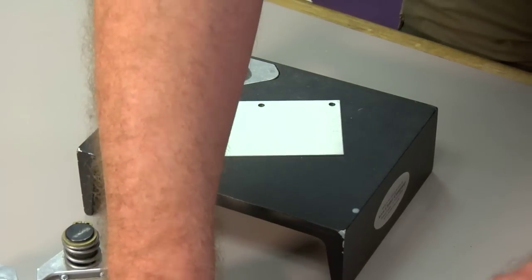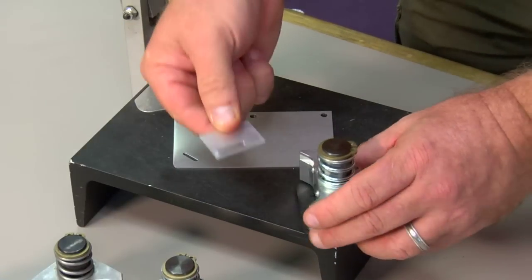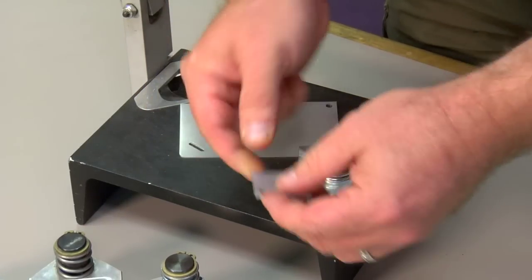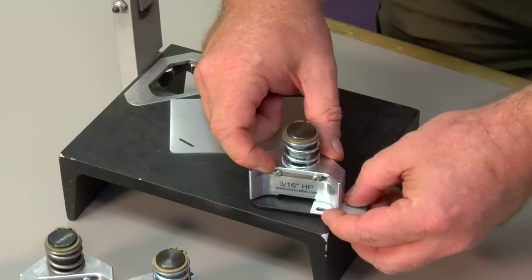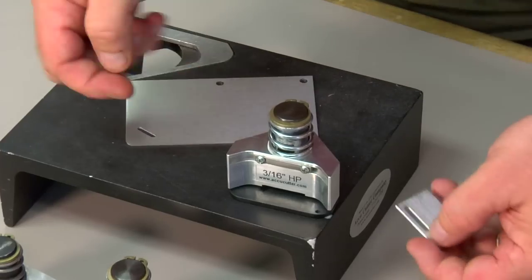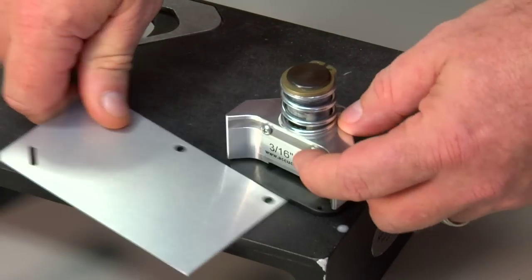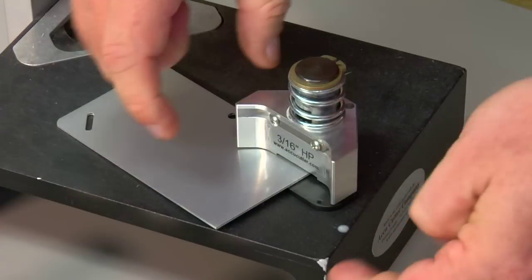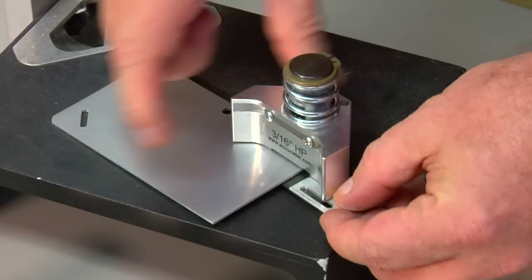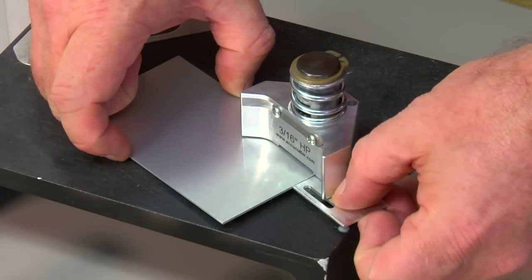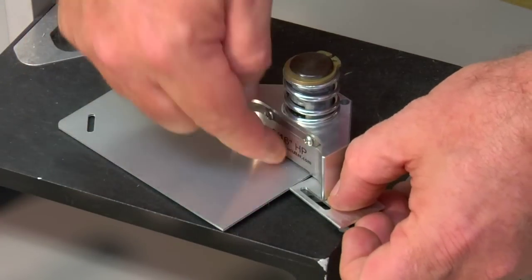Another attachment for these particular blades is your side guide. Now these are nothing more than a guide to keep the aluminum held so that when you punch the aluminum with the guide in place it's going to keep the aluminum right up against the guide so that you punch the hole in the same place every time.